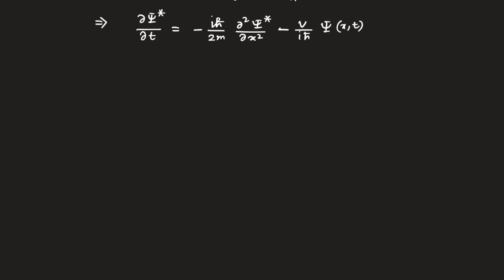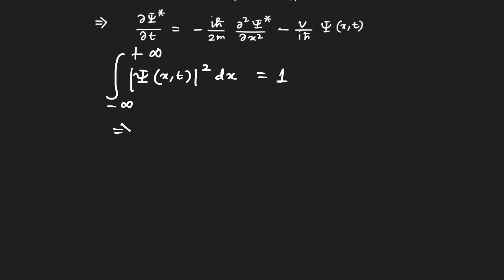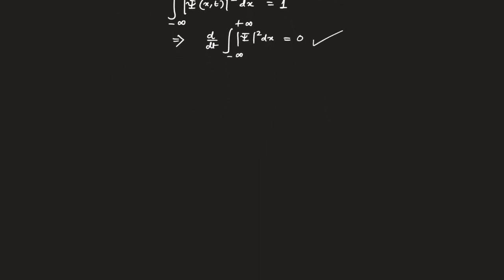We know that the integral from minus infinity to plus infinity of |ψ(x,t)|² dx always equals one, because probability is conserved. Taking the derivative on both sides gives d/dt of the integral of |ψ|² dx from minus infinity to plus infinity equals zero.